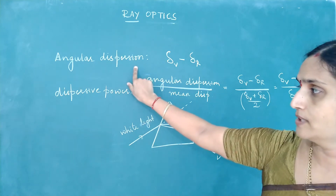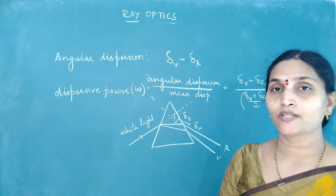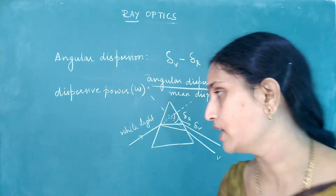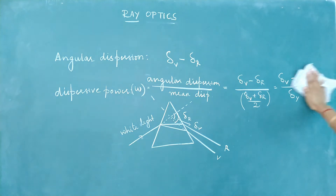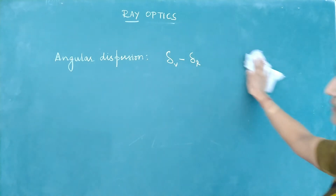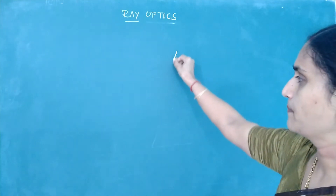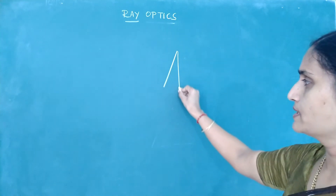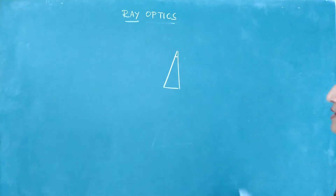For thin prisms: a prism is called thin if its angle of refraction is very small, smaller than 5 degrees. If the apex angle of a triangular prism becomes very, very small, we call it a thin prism.